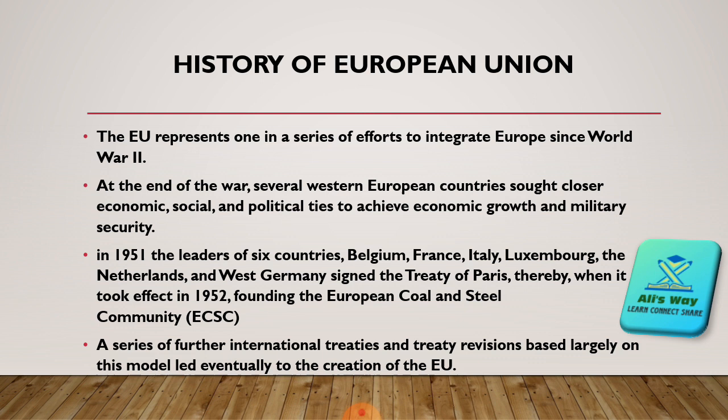In 1951, the leaders of six countries — namely Belgium, France, Italy, Luxembourg, the Netherlands, and West Germany — signed the Treaty of Paris. When it took effect in 1952, it laid the founding groundwork. There were many other treaties signed between the European nations, making the ground framework for the European Union. A series of further international treaties and treaty revisions based largely on this model eventually led to the creation of the European Union. Behind the organization of the European Union, there are many treaties signed between the European nations.